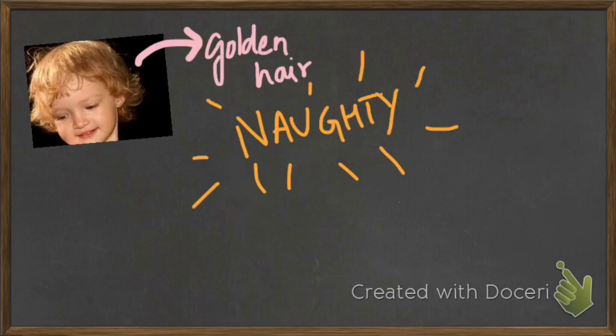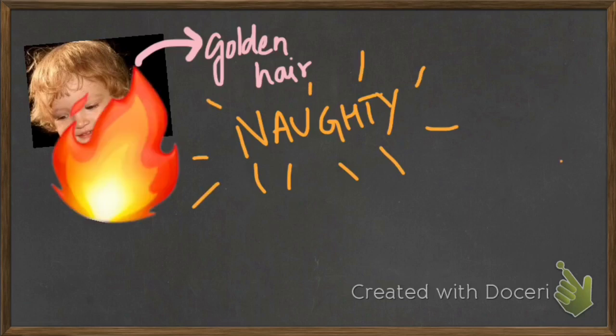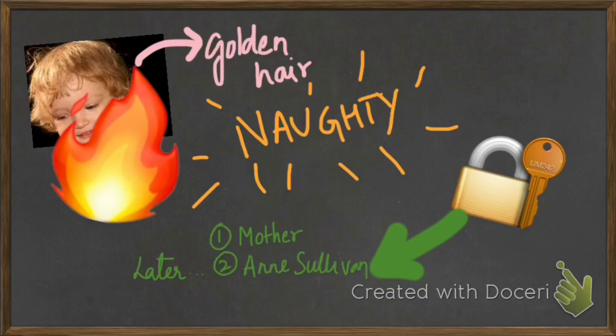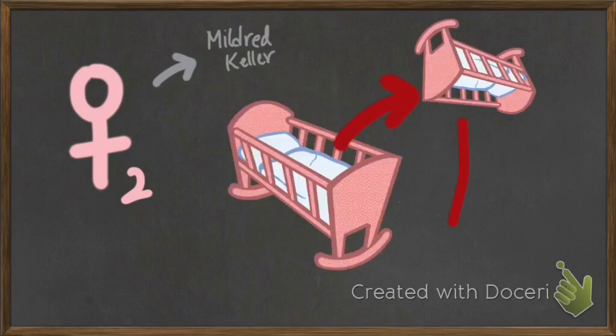Helen Keller was a small girl with golden hair and was very, very naughty. She once caught fire and she even locked her mother and her teacher inside the room. She got all the attention while she was small.